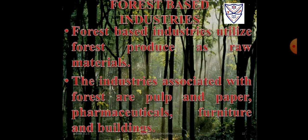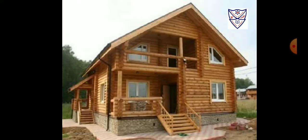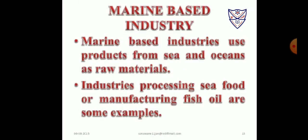Forest-based industries utilize forest produce as raw materials. Industries associated with forests include pulp and paper, pharmaceuticals, furniture, and building materials. Marine-based industries use products from oceans and seas as raw materials. Examples of such industries are those which process seafood or manufacture oil from fishes.